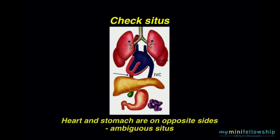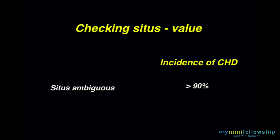Because if the apex of the heart and the stomach are on opposite sides, then situs is ambiguous. And with ambiguous situs, the incidence of congenital heart disease is greater than 90%. So any time that we see ambiguous situs, we clearly need to send the patient for an echocardiogram, whether we can observe anything wrong with the heart or not.